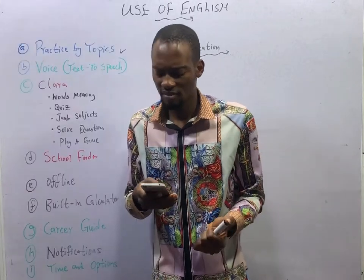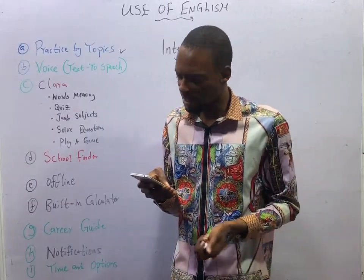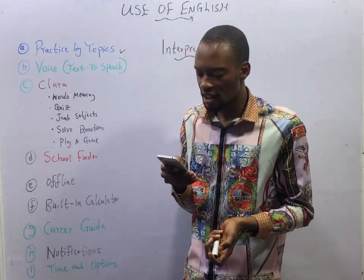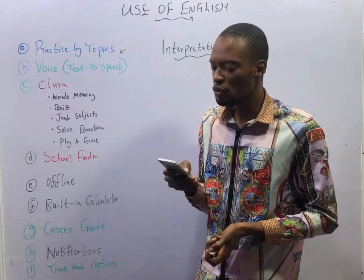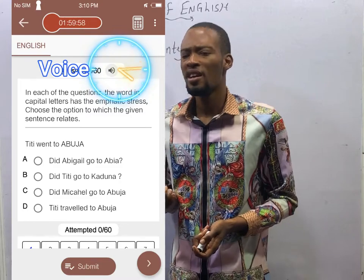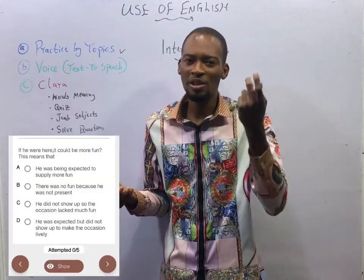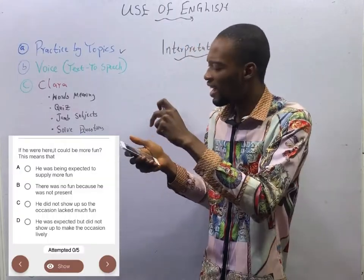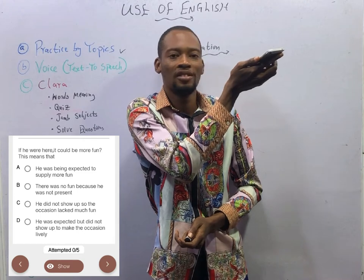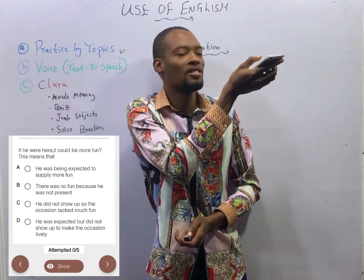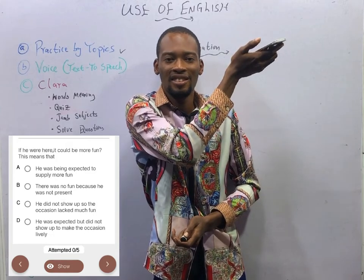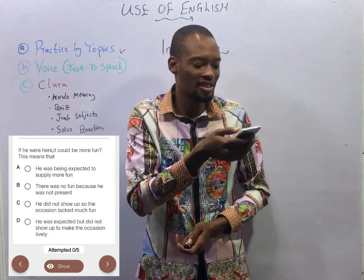Let's say I'm tired and I want to relax, but I decide to answer this question: 'If he were here, it could be more fun.' This means — Option A: he was being expected to supply more fun. Option B: there was no fun because he was not present. Option C: he did not show up, so the occasion lacked much fun. Option D: he was expected. You can just relax and turn on the audio feature — the app reads questions for you while you are in your case, traveling, and listening without focusing.